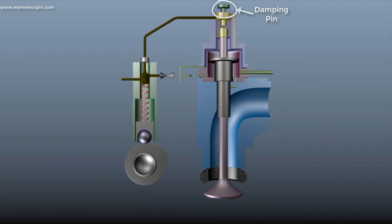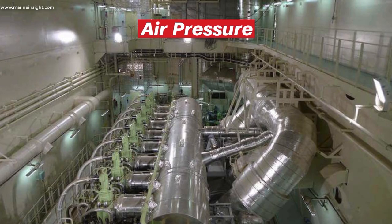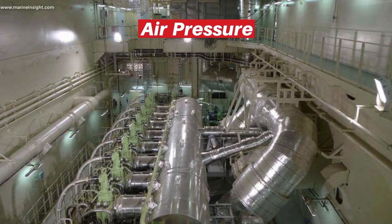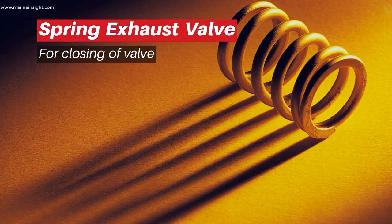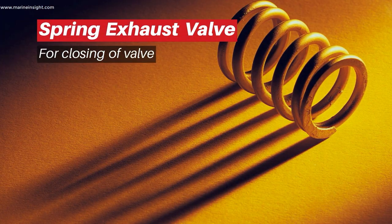A damping arrangement on top of the piston in the exhaust valve prevents hammering of the valve seating. In most of the modern engines, air pressure is used to close the valve. However, in some old engines, spring was used instead of air pressure to close the valve.